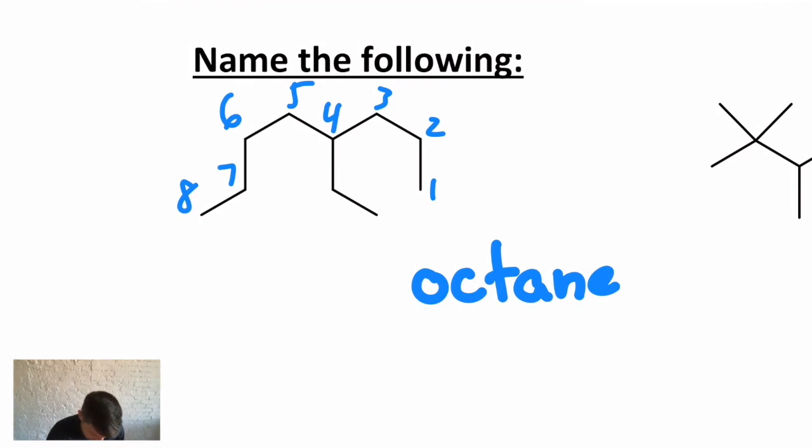You don't have to write the numbers down, but I'm doing it in this case. And then it shows me I have a branch on carbon number 4. If I were to number it left to right—1, 2, 3, 4, 5, 6, 7, 8—I would have a branch on carbon 5, and I want to get lower numbers for the branches.